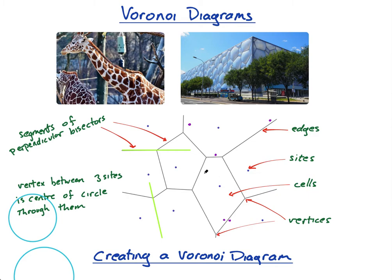That is the perpendicular bisector of these two points. That is the perpendicular bisector of these two. It shows you why this school is closest to this point and this school is closest to this point — because the perpendicular bisector cuts in half the area between the two points. So obviously anything to the left of this is closer to this point.